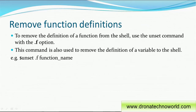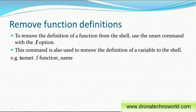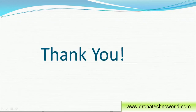Now that we've added these functions to our library or execution path, how can we remove them? In order to remove a function from the shell, we have to use the command 'unset' with the option '-f'. This command is used to remove the definition of a function from the shell. For example: 'unset -f function_name'. If you want to remove the message function, type 'unset -f message'. These are the details about functions — how to write a function, how to call a function in a script, how to call a function on the command line, and how to remove these functions.